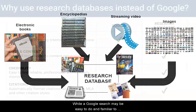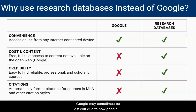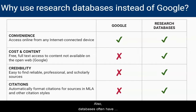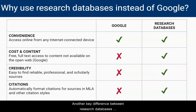While a Google search may be easy to do and familiar to you, finding reliable content on Google may sometimes be difficult due to how Google organizes search results. Also, databases often have features geared toward helping student researchers, such as citation generators and the ability to limit results by article type.